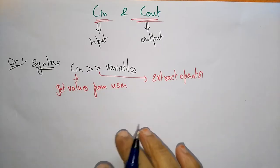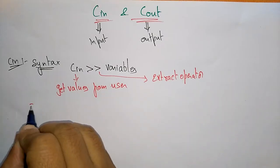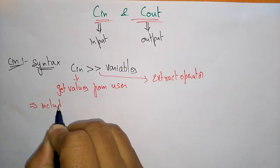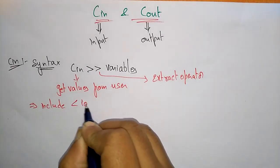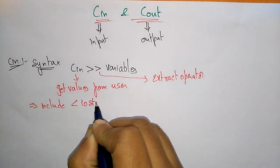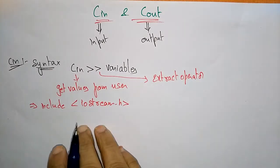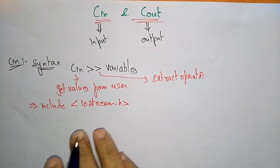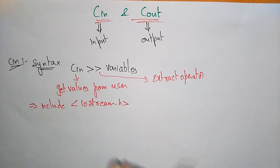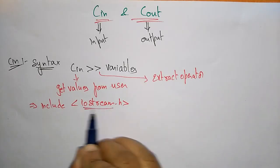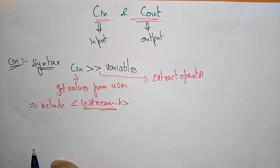cin is included in the iostream.h header file. cin is nothing but input, and this input will be stored in the iostream.h header file.